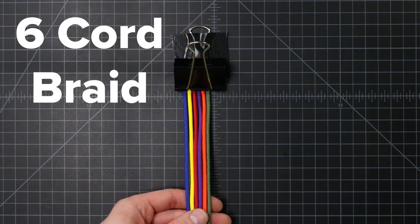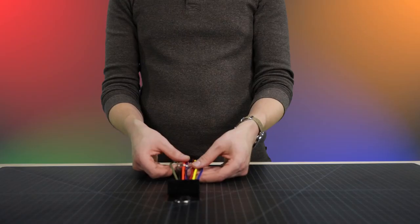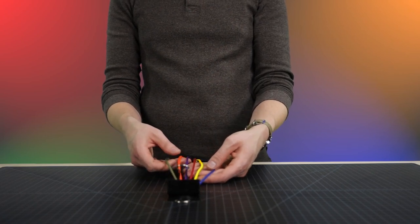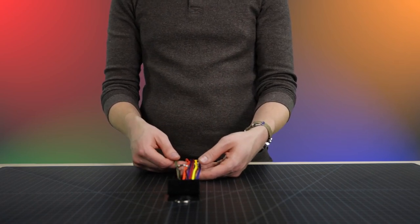Now let's get real crazy and add a sixth cord. We're back to an even number, and so a traditional braid isn't possible. We've got to go back to that plating method.